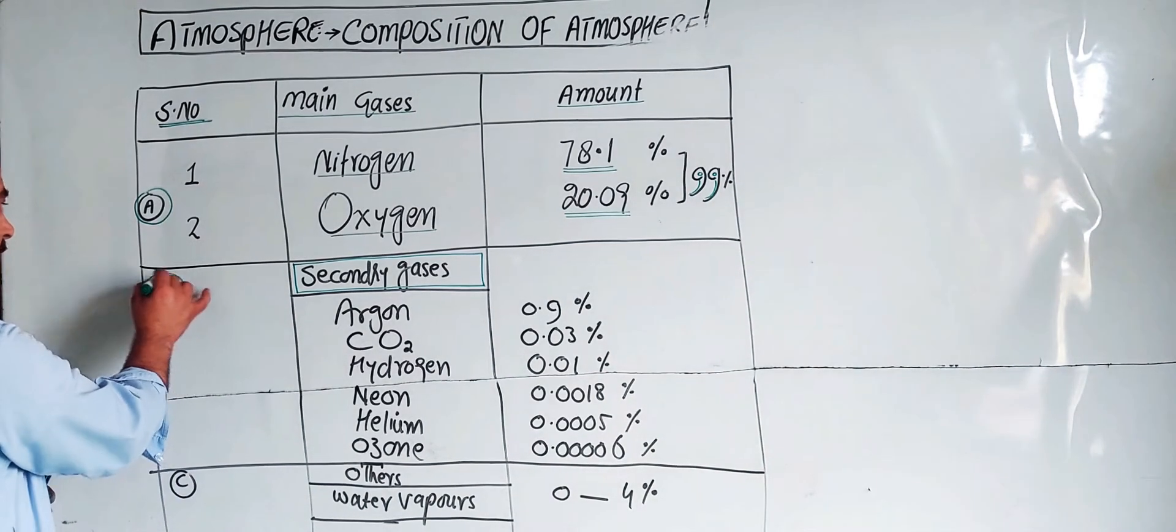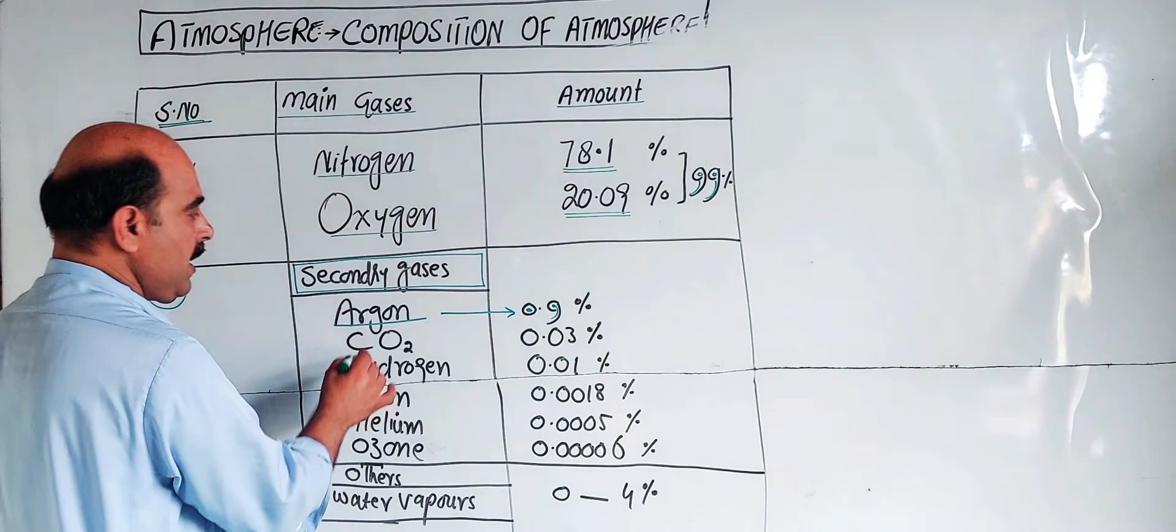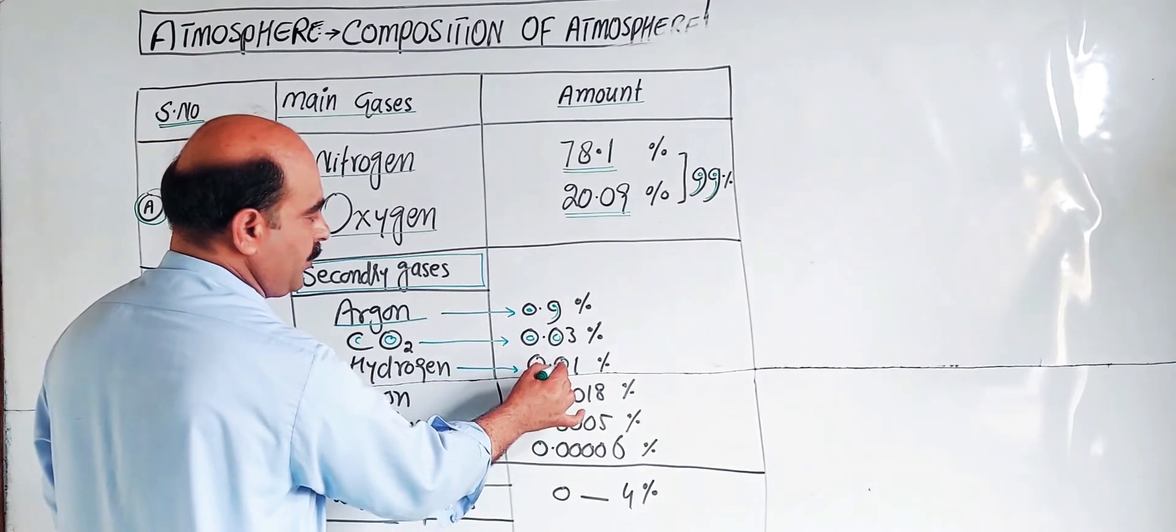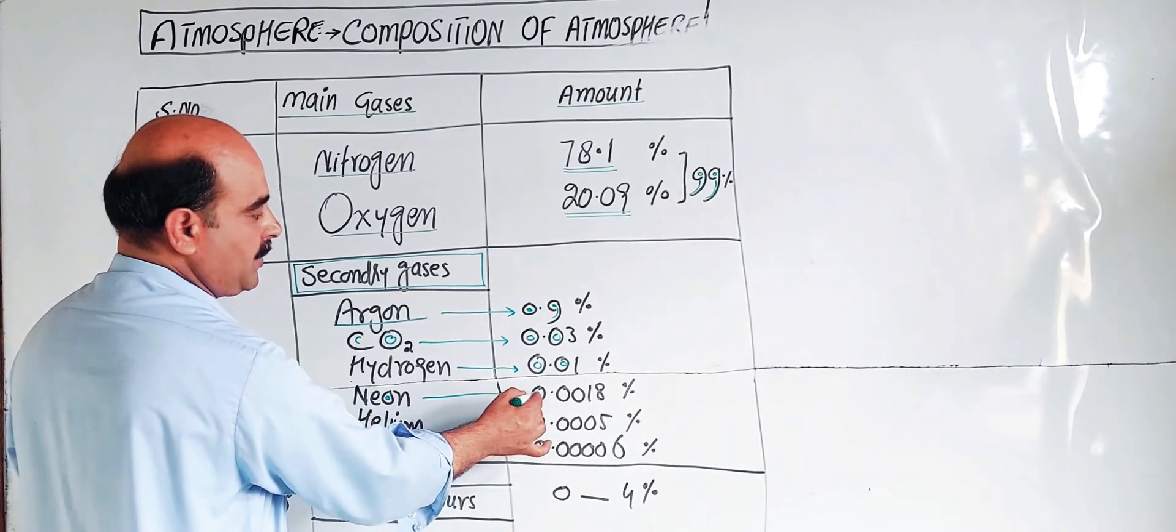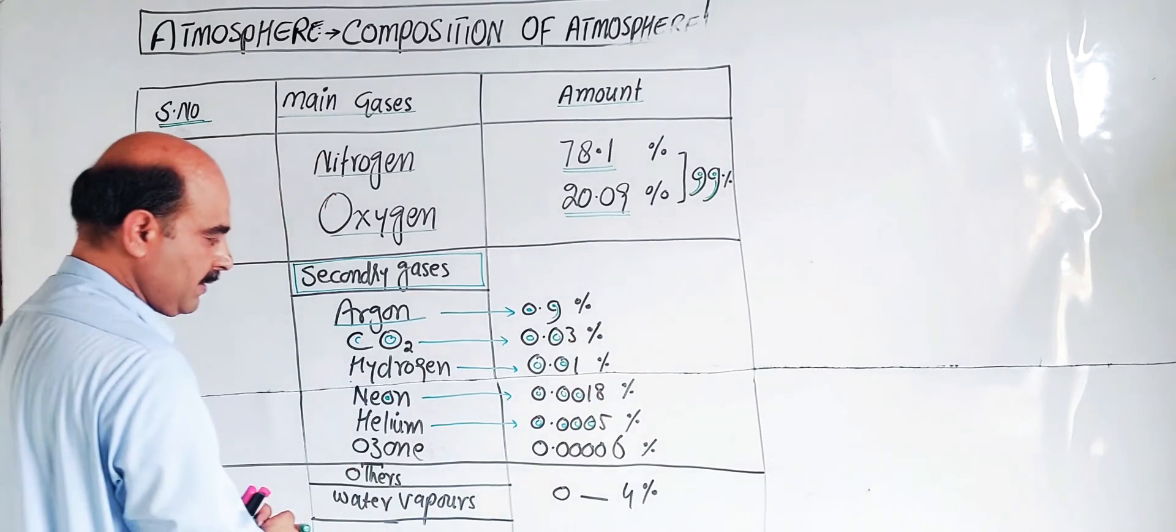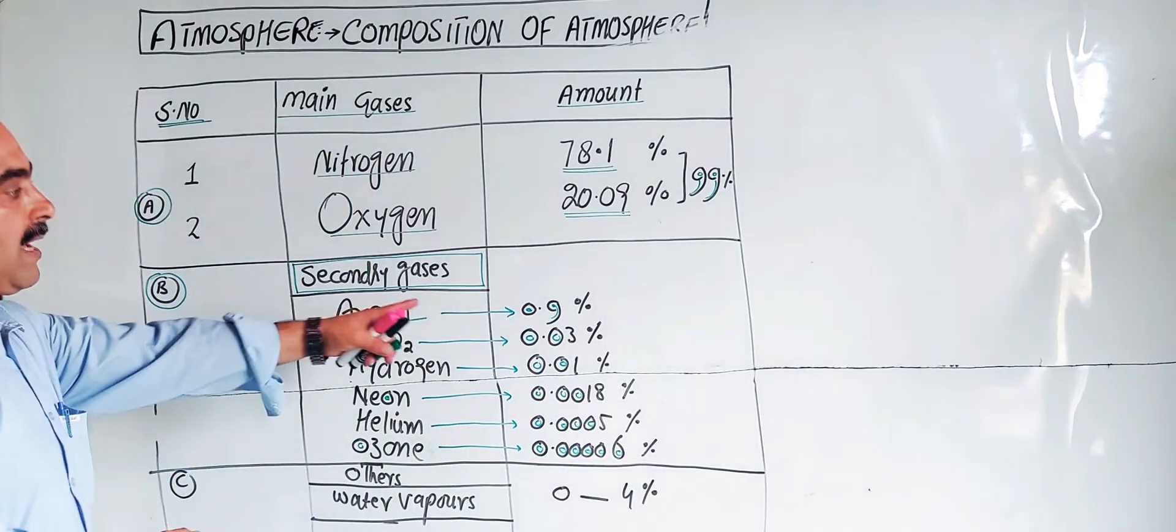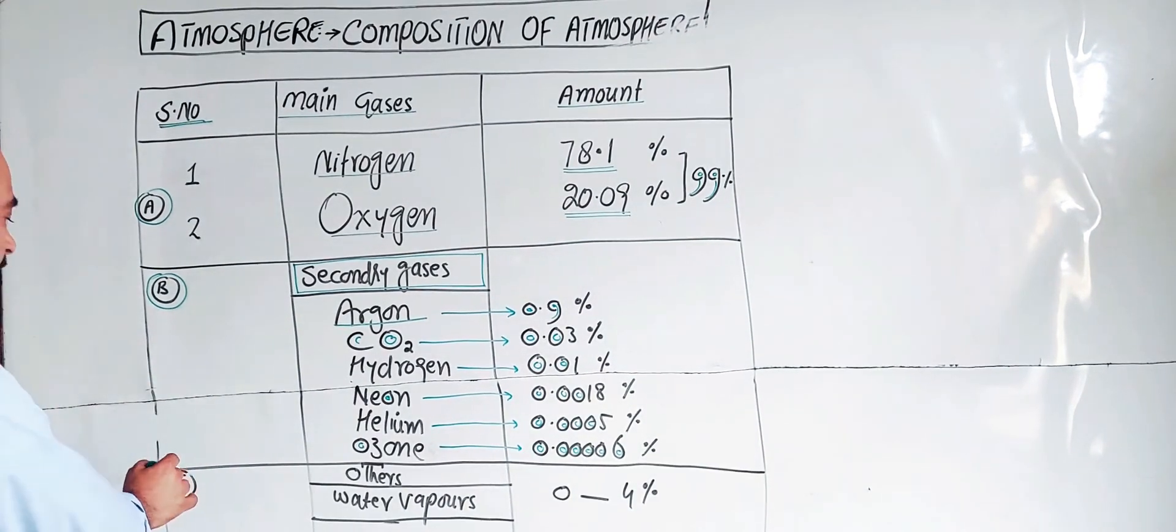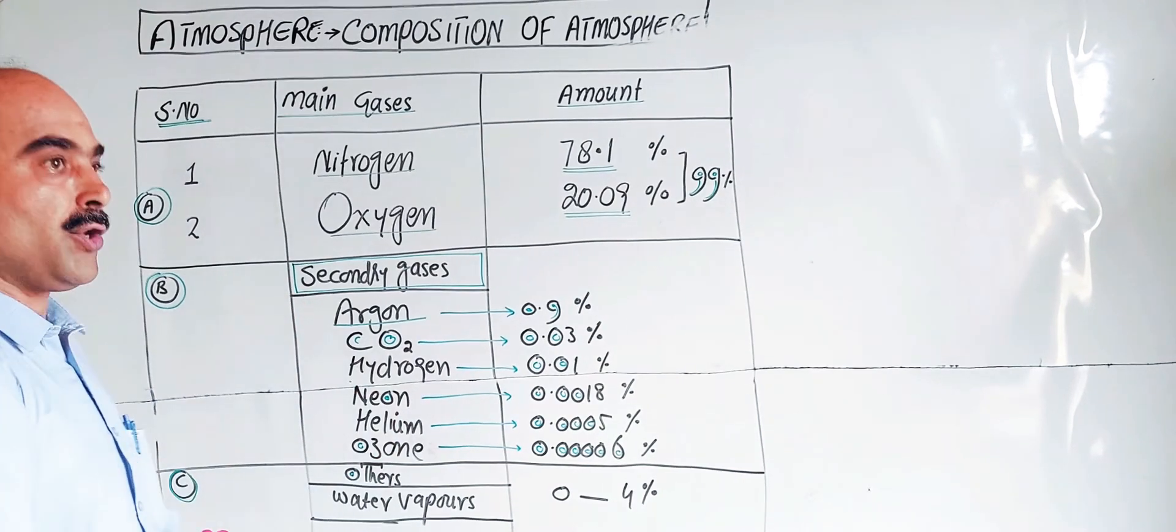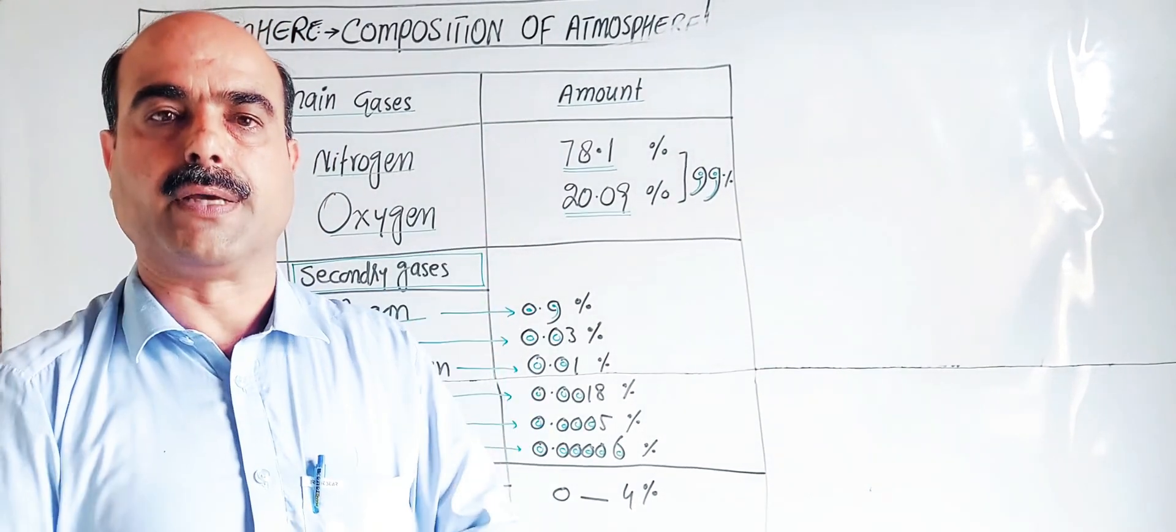Secondary gases in category B include argon at 0.9%, carbon dioxide at 0.03%, hydrogen at 0.01%, neon at 0.0018%, helium at 0.005%, and ozone at 0.0006%. These are the minor constituents of the atmosphere. Category C includes others like water vapors.